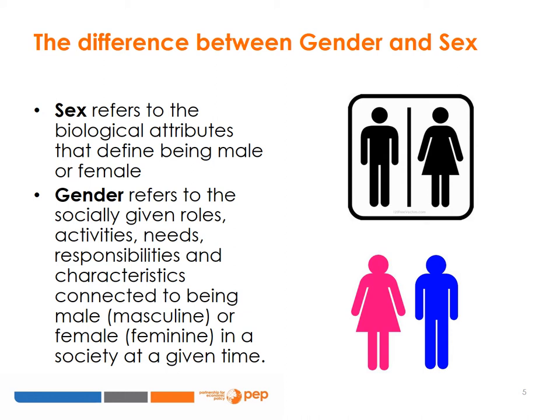Gender thus reflects social codes that tell people how they are supposed to think of themselves and how they are supposed to interact with each other. For example, those who identify as men may also want to behave as men are socially expected to behave.